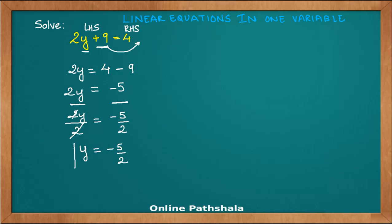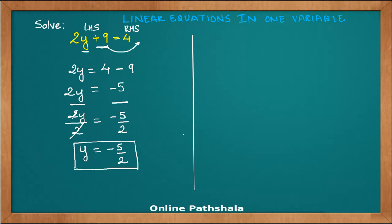For the value y equals minus 5 by 2, this equation should hold true. One good practice is to always check that the solution we have arrived at is correct. What we do is simply substitute this value of y on the left hand side and see whether we get the right hand side. Let us try to do that in a different color.